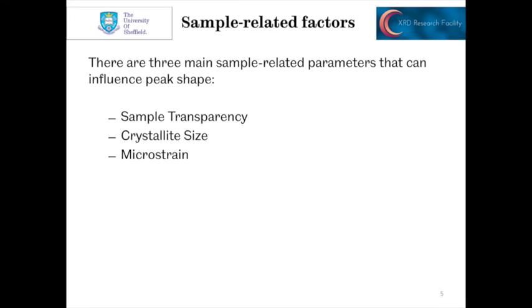There are three main sample-related factors, and obviously these are going to vary much more from sample to sample that goes into the machine. The three main effects are sample transparency, crystallite size, and microstrain. We'll look at each of these in turn.